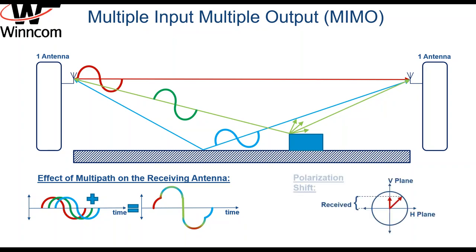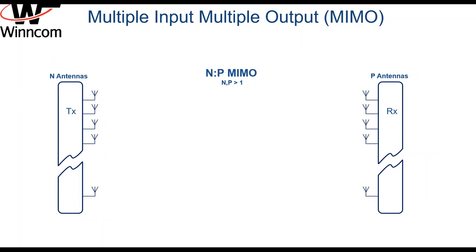One other aspect of reflection is the change of polarization. When we send a signal out, it is supposed to travel and be received on the same plane, mostly either vertical or horizontal. When the signal is reflected, it may also change its polarization and you may only receive a weaker portion of the signal. So let's have a look at MIMO systems and see how it helps with multipath and polarization problems.